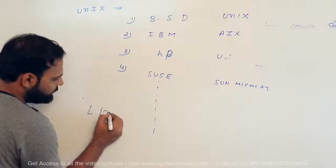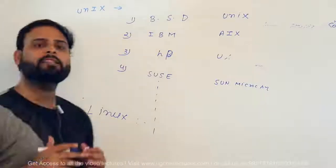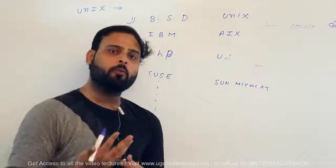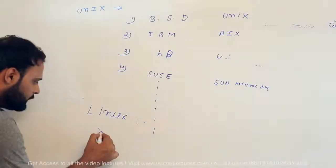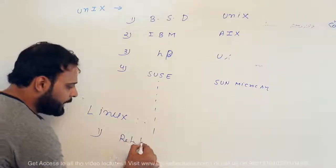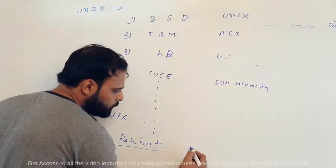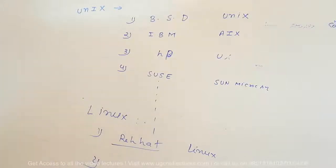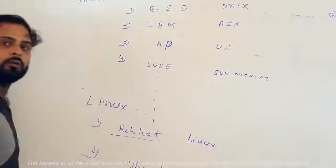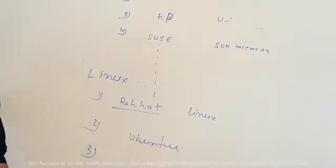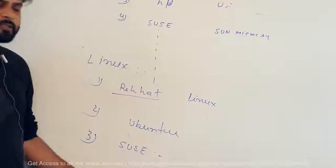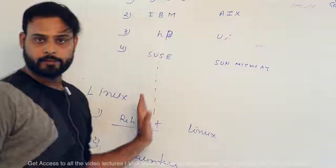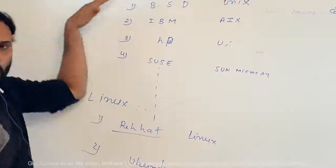Linux also has a lot of flavors. It is GUI-based as well as command-line based, and many companies have developed Linux in different configurations. The very famous Linux flavors include Red Hat, Ubuntu, and SUSE. There are actually more than 600 kernel distributions available in Linux. So we have two major categories: UNIX and Linux.